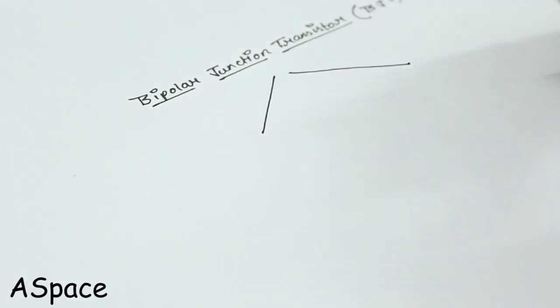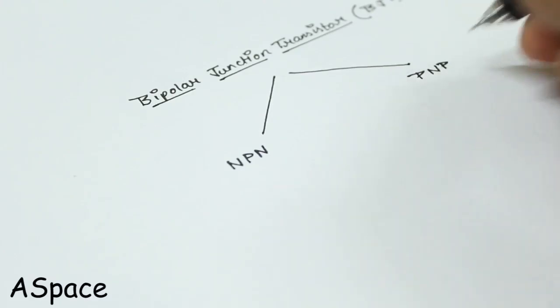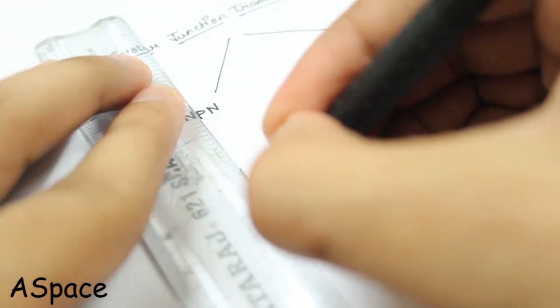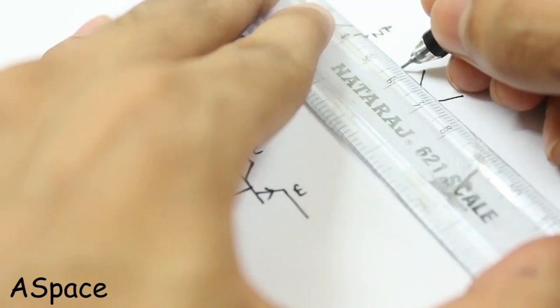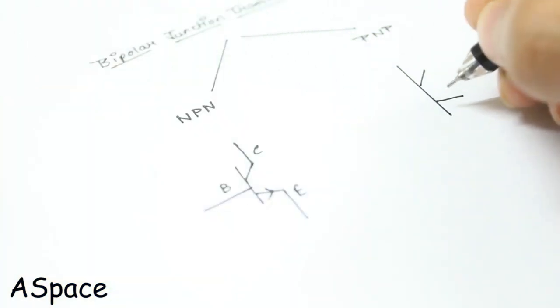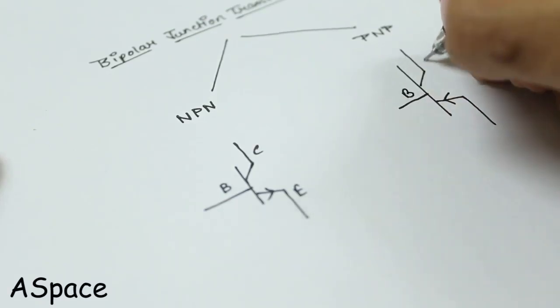Talking about BJT, it is classified as NPN and PNP. The arrow mark at the emitter indicates the flow of current. BJT can act as a switch as well as an amplifier. Here, in this project we will deal with the switching property.